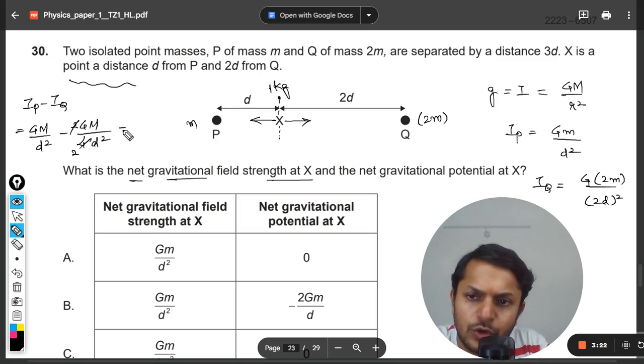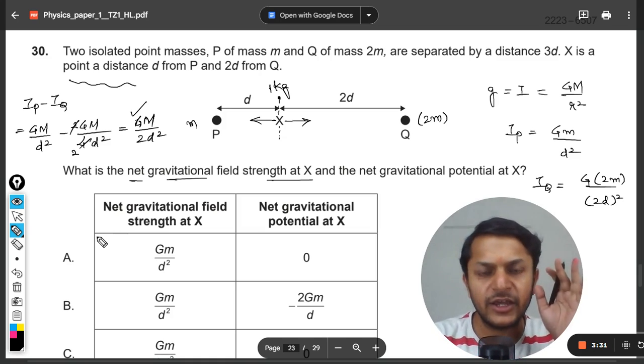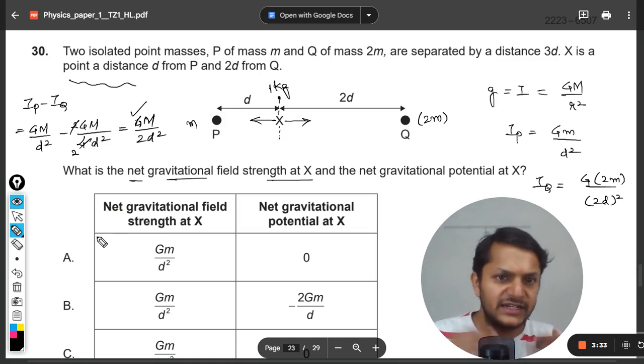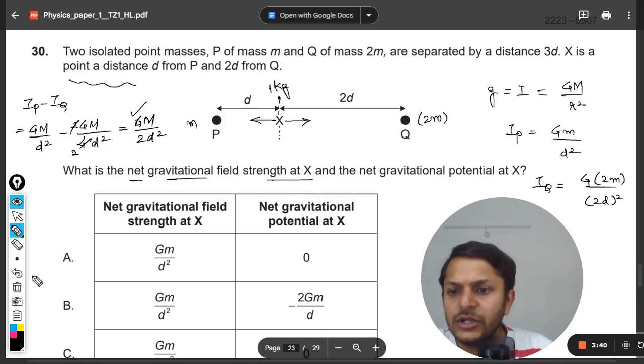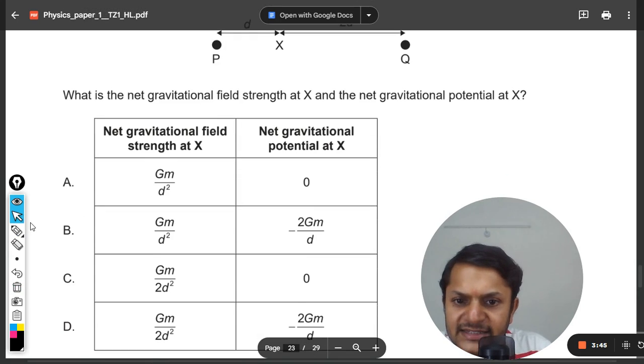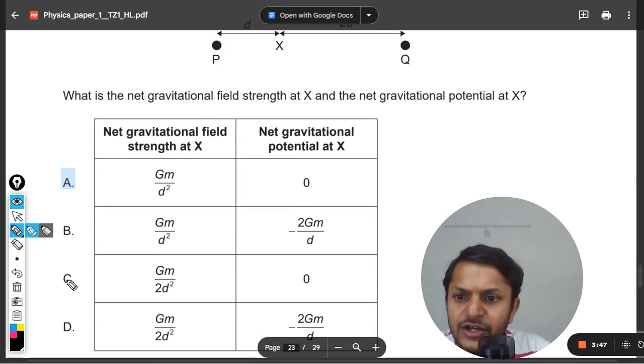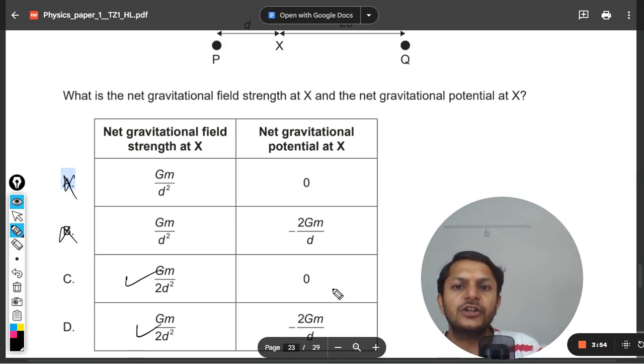This will be 2, so half, so it will be Gm divided by 2d square. Clearly the net gravitational force will be this: Gm divided by 2d square. We have basically subtracted both of them, nothing more, nothing else. And what about the potential now? So let us first see Gm divided by 2d square. Yes, clearly you can see here, either C or D, but neither A nor B. Definitely C or D.